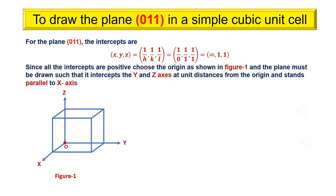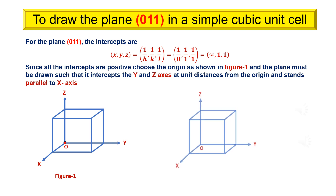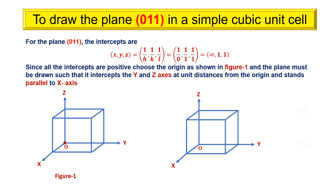For the plane (0 1 1), the intercepts are x, y, z equals infinity, 1, 1. Since all the intercepts are positive, choose the origin as shown in figure 1. Then draw the plane such that it intercepts the y and z axes at unit distances from the origin and stands parallel to x-axis.